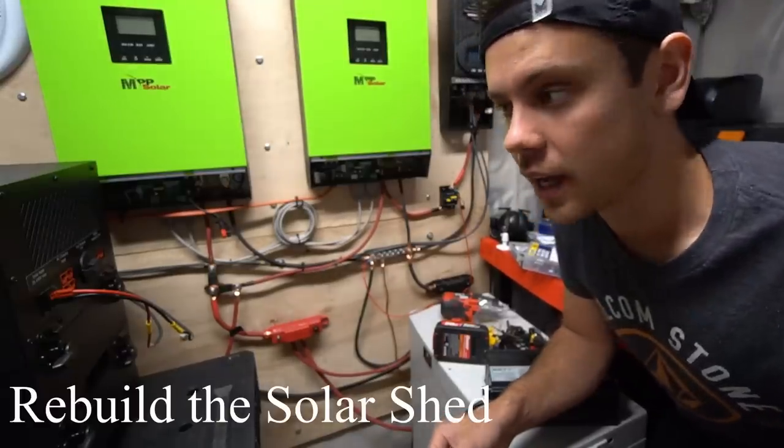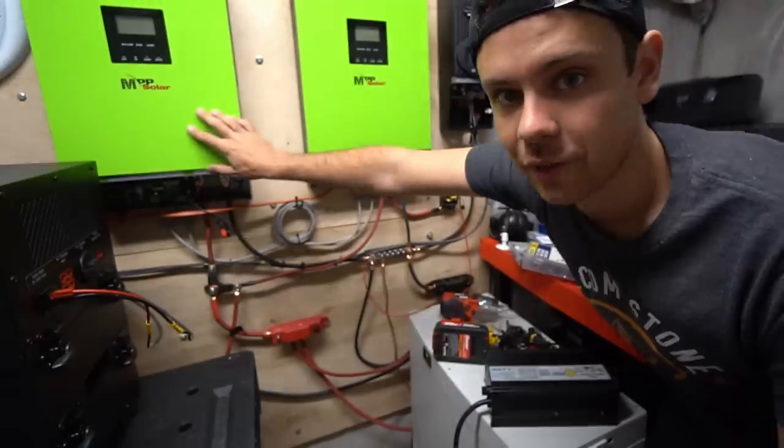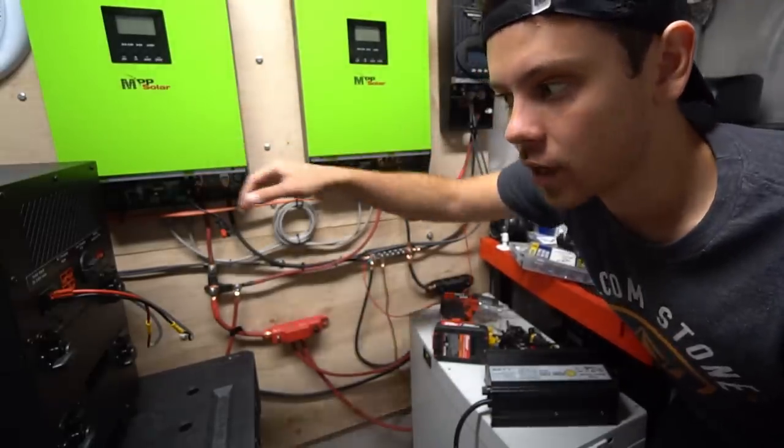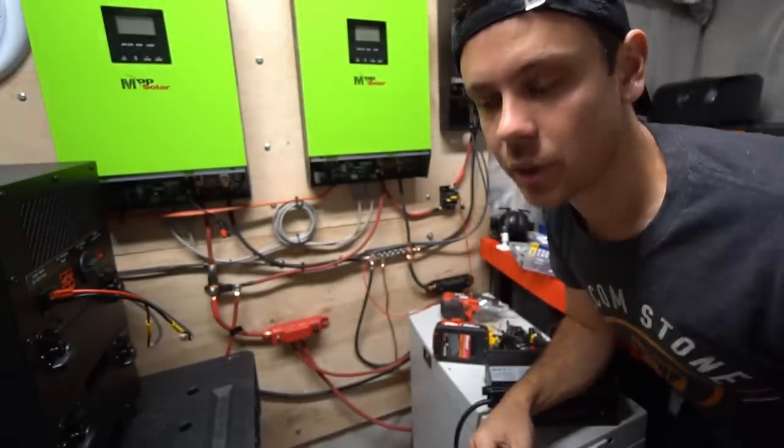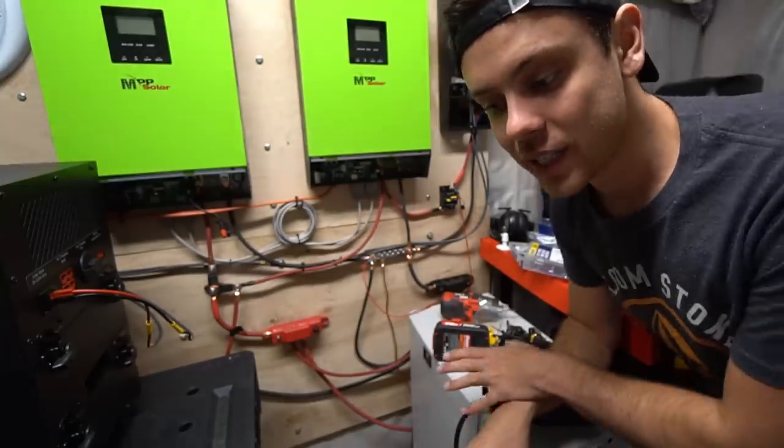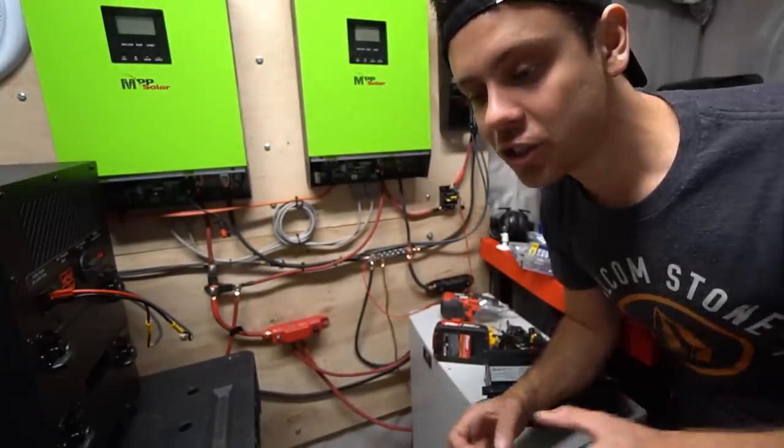Today we're going to rebuild the solar shed. So we have two LV2424s in parallel and they run at a nominal of 24 volts, but I want to run it at 48 volts with a smaller battery pack because currently it's 14 kilowatt hours and that's just too much.